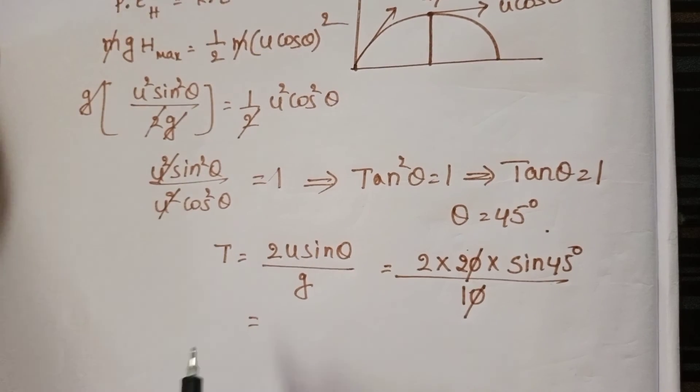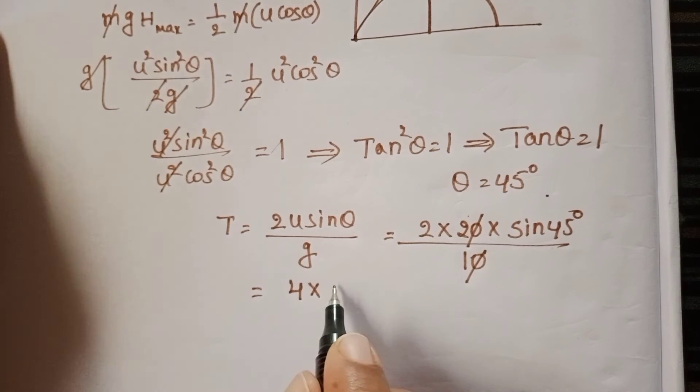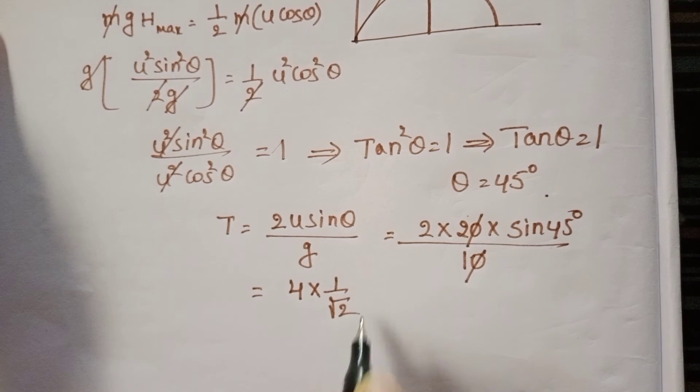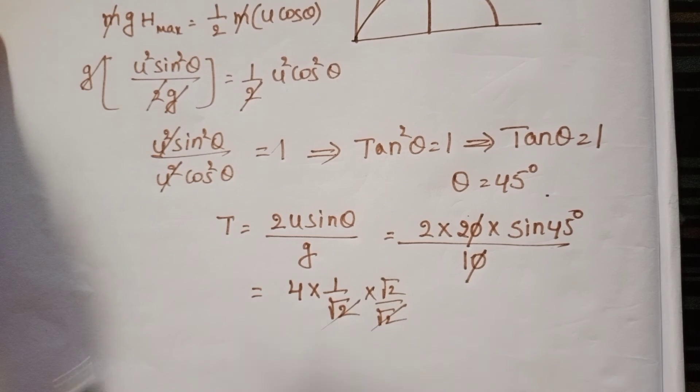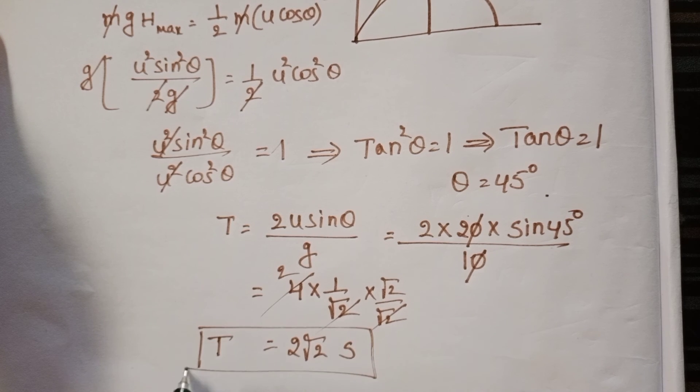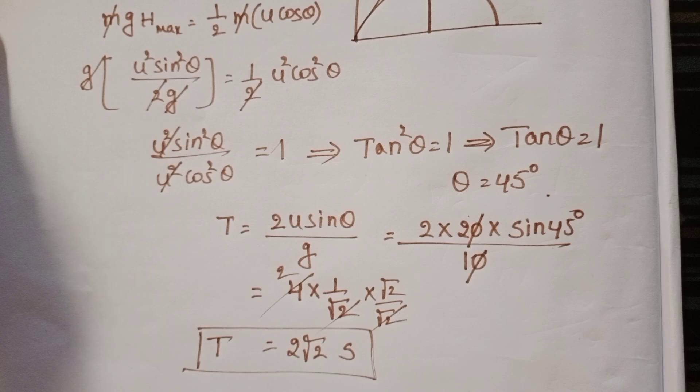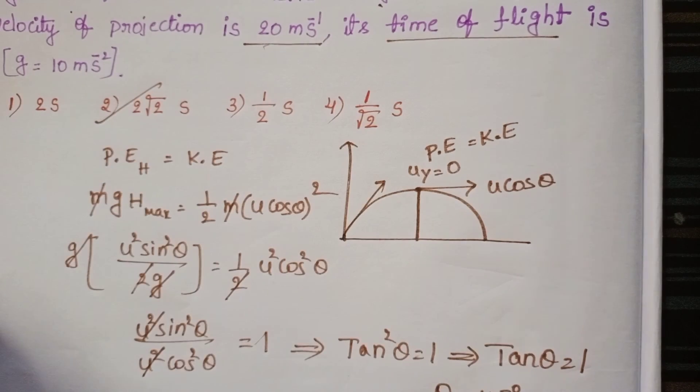The zero cancels, giving 4 × sin 45°, which equals 4 × 1/√2. Simplifying: √2 × √2 equals 2, which cancels with the 4. Therefore, time of flight equals 2√2 seconds. Checking the given options, the second option is correct.